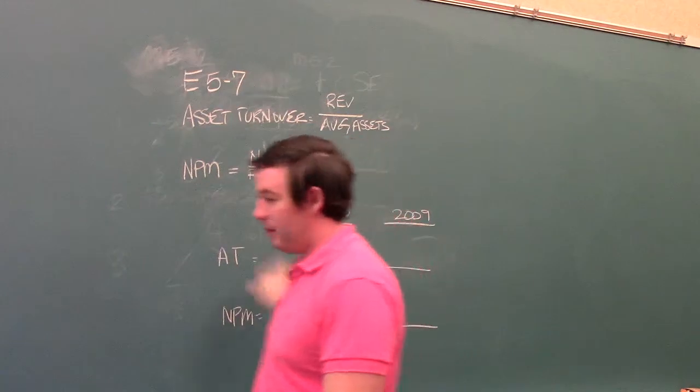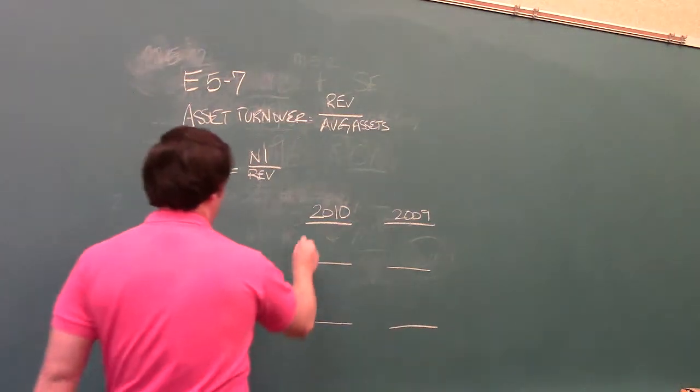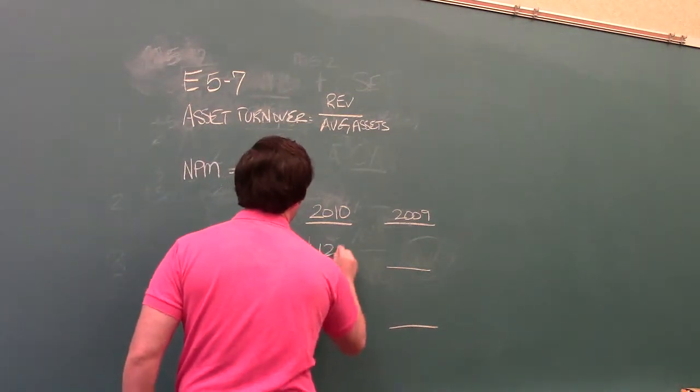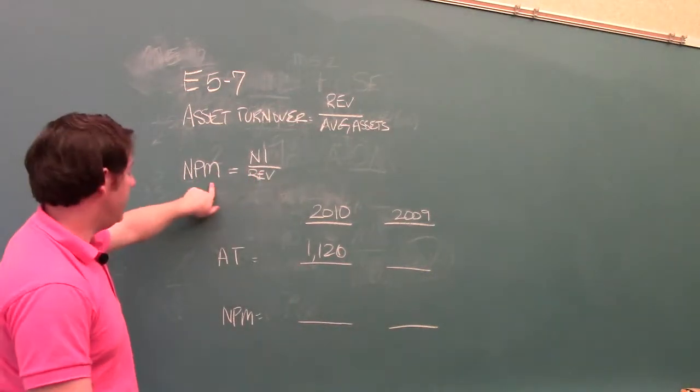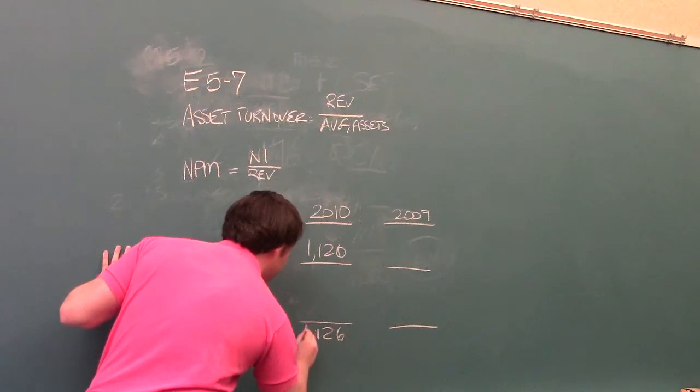So if we plug in the information here, for asset turnover ratio, first thing we want is revenue. It gives us revenue for 2010 is 1,126, and because revenue is the denominator for the net profit margin ratio, I'm going to plug it in down here as well, so we don't have to write it twice.